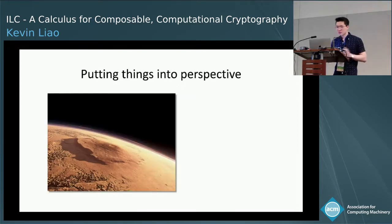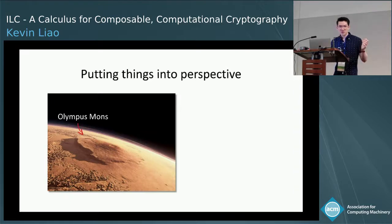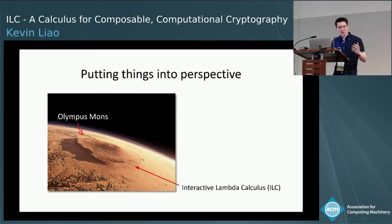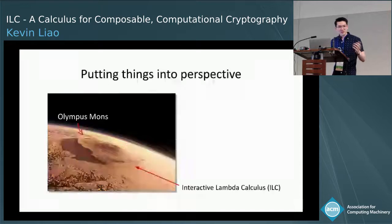To put things in perspective, we have a long journey ahead. We're kind of at the foothills of a giant mountain — this is Olympus Mons, the tallest mountain in our solar system. In this paper, we made a first step in formally writing down UC protocols and their specs, though even this first step required finicking with some fairly low-level details.